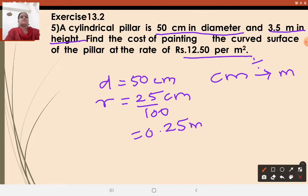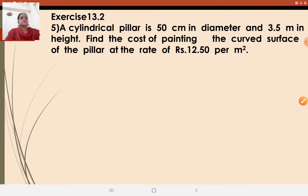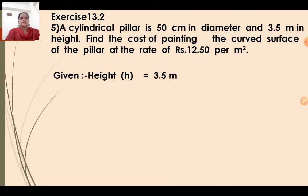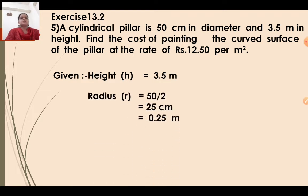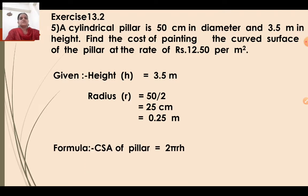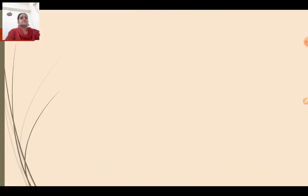We want to find the cost of painting the curved surface area. So we need to find the CSA value first and then find the total cost. Given: height H equals 3.5 meter, radius equals 50 by 2 equals 25 cm which converts to 0.25 meter. The formula for curved surface area of a pillar equals 2πRH.